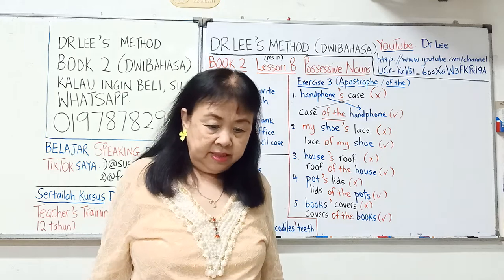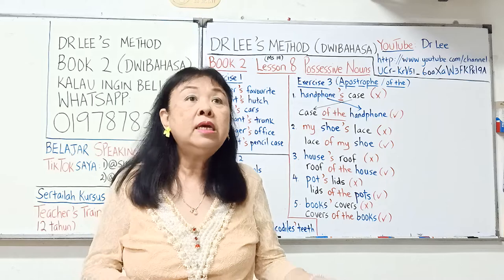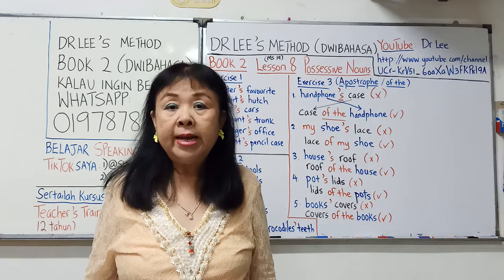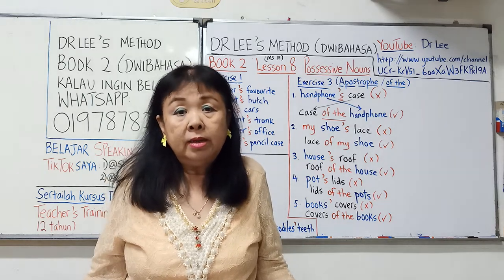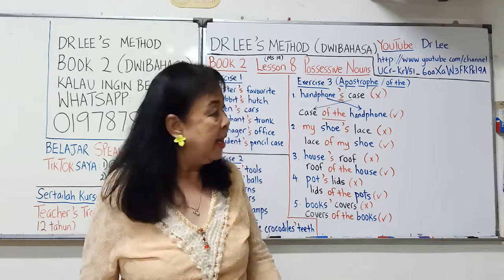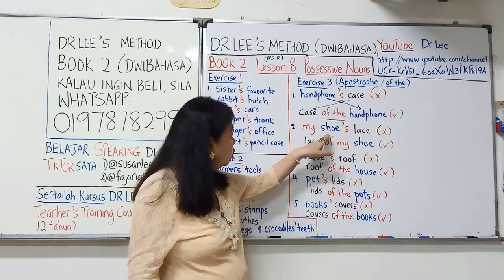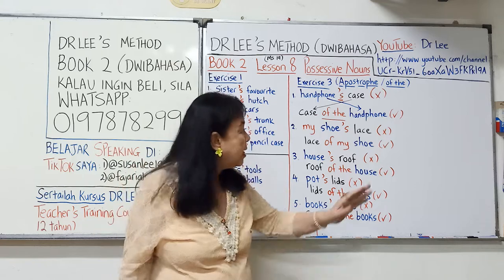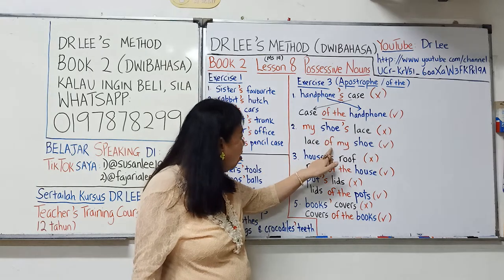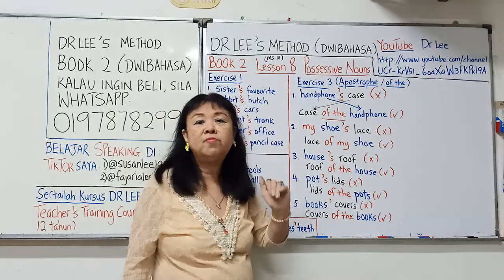Number 2: 'This is my shoe lace' — boleh tak? Tak boleh, sebab kasut itu tidak bernyawa. Maka kita gunakan 'of the' untuk menggantikan apostrophe. 'Lace' pindah ke depan, apostrophe S diganti dengan 'of mine', dan 'shoe' di belakang. Jawapan: 'This is the lace of my shoe.'